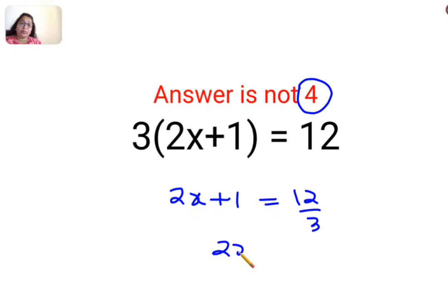The next step is 2x and whatever is the answer, 12 by 3 is 4, and 1 is getting added. So when you subtract it on the other side it becomes minus 1. So basically you have got 2x equals to 4 minus 1, which is 3.